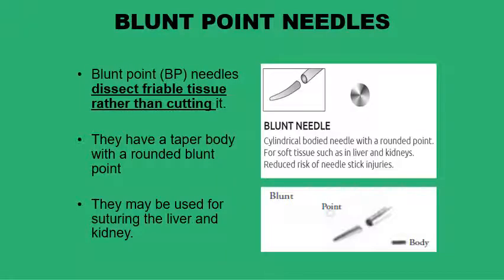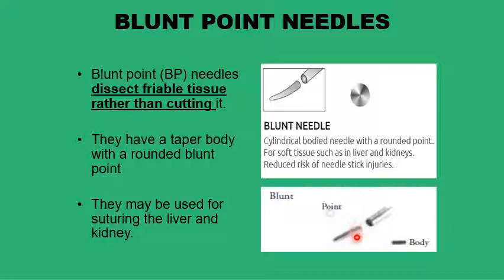We start with the blunt needles. There are two common blunt needles. They are designed to minimize the cutting action — they dissect and pass through tissues with minimal cutting. Their bodies are designed to minimize cutting, and the needle points are usually circular or cylindrical, so they won't cut into tissue. The rounded point gradually transforms into either a cylindrical or a rectangular body.